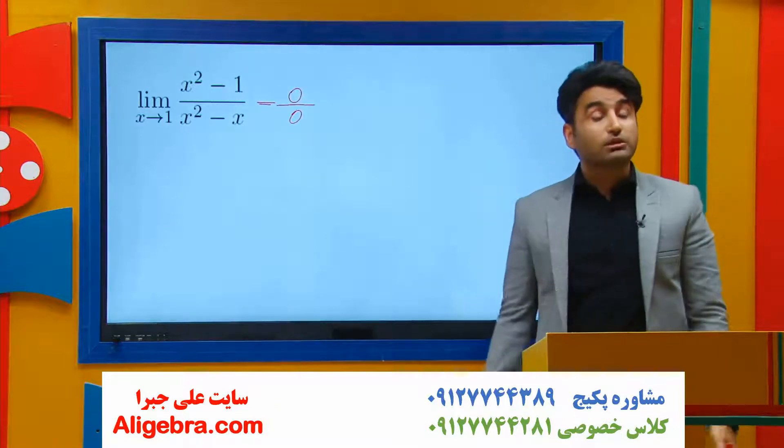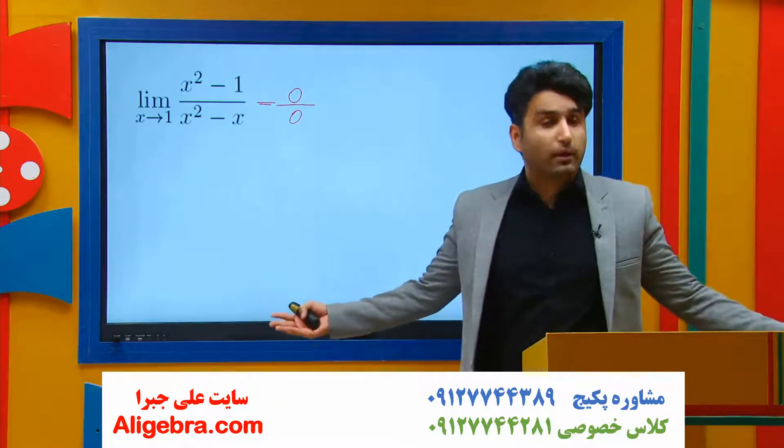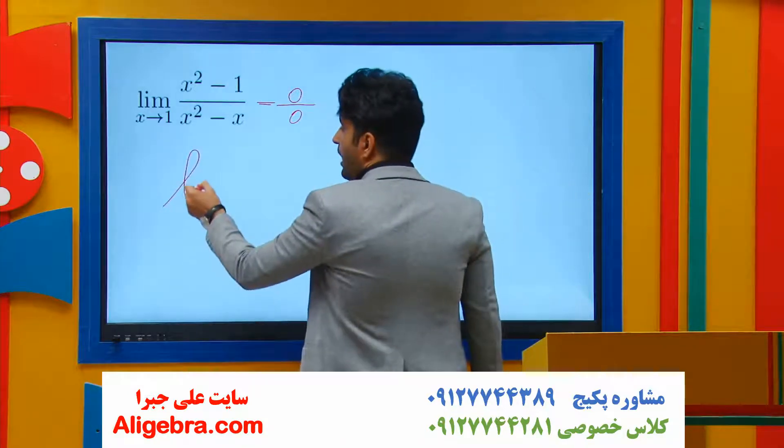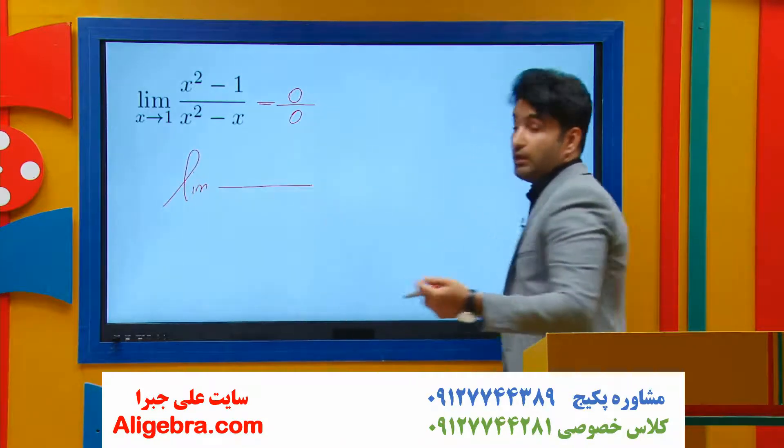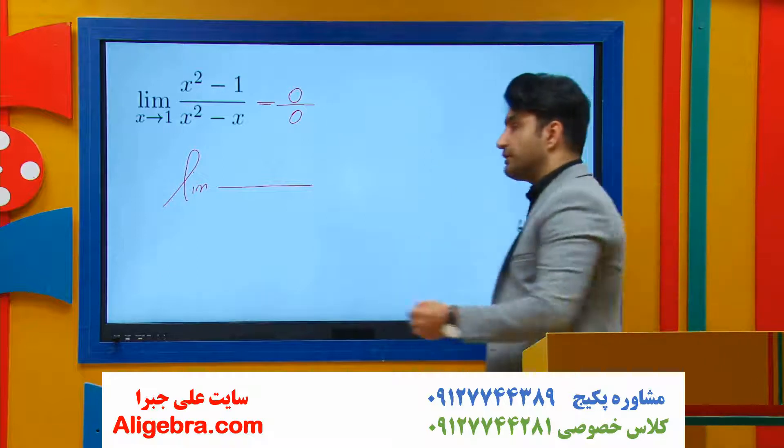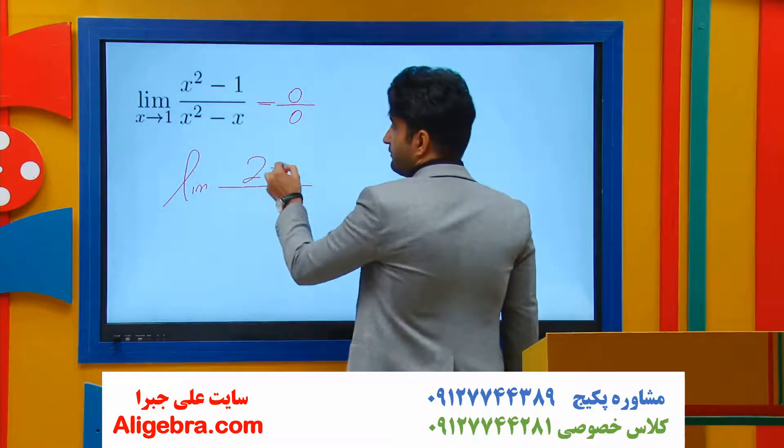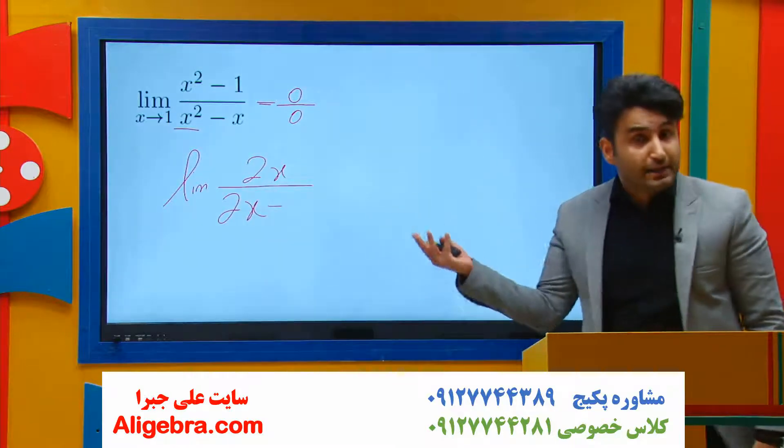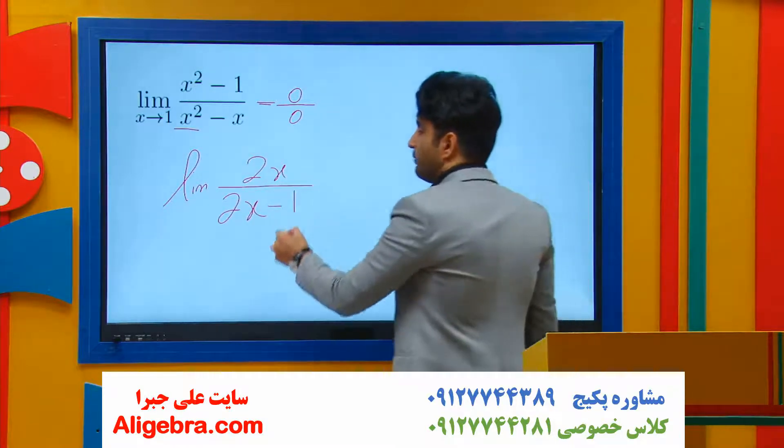0 over 0 gives us the permission to use L'Hospital's rule. So take derivative of top and bottom of the fraction separately. The derivative of x squared is 2x. The derivative of x squared on the bottom is 2x, and the derivative of minus x is minus 1.